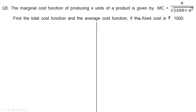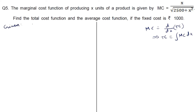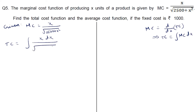The marginal cost is given; we need to find the total cost function. Marginal cost is the derivative of total cost, so total cost is the integral of marginal cost dx. Given marginal cost equals x by root of (2500 plus x squared), total cost is integral of x dx upon root of (2500 plus x squared).